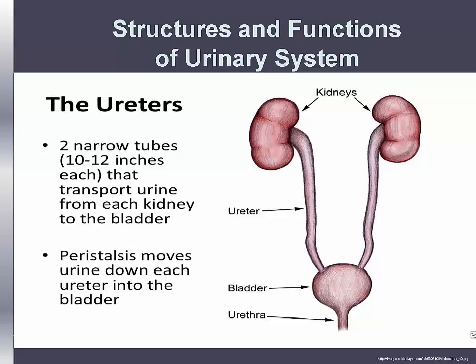The urethra is a small tube that incorporates the smooth muscle of the bladder neck and extends to the striated muscle of the external meatus. The primary function of the urethra is to serve as a conduit for urine from the bladder to outside the body during voiding and to control voiding.